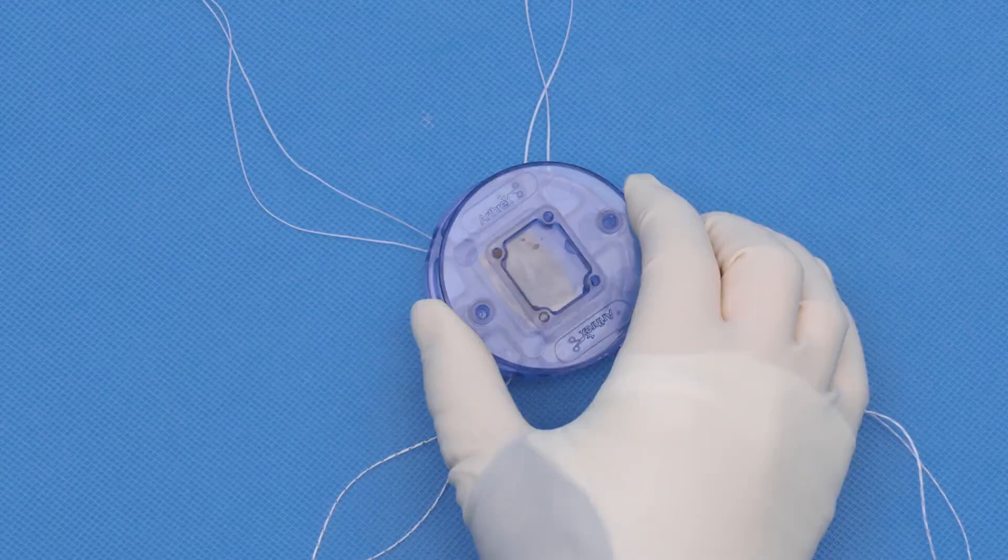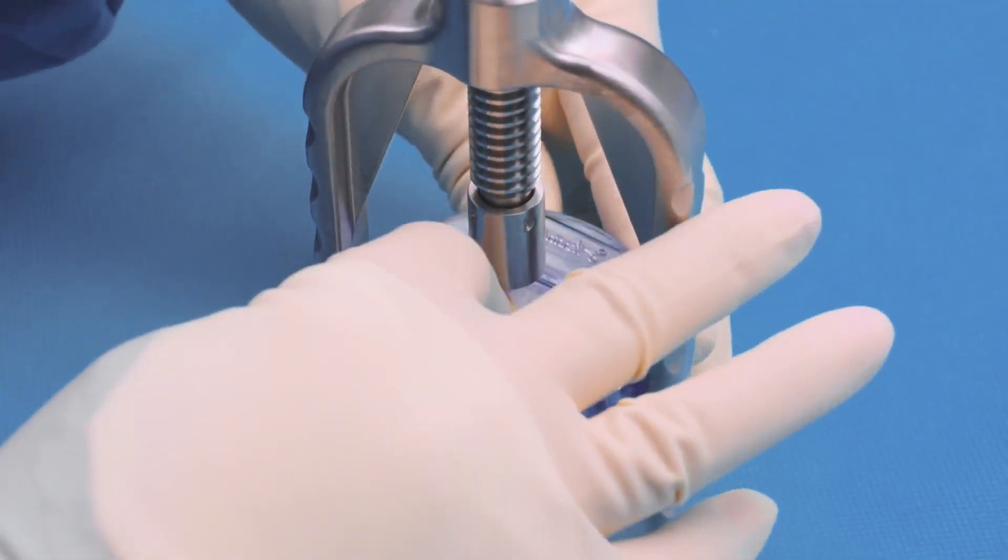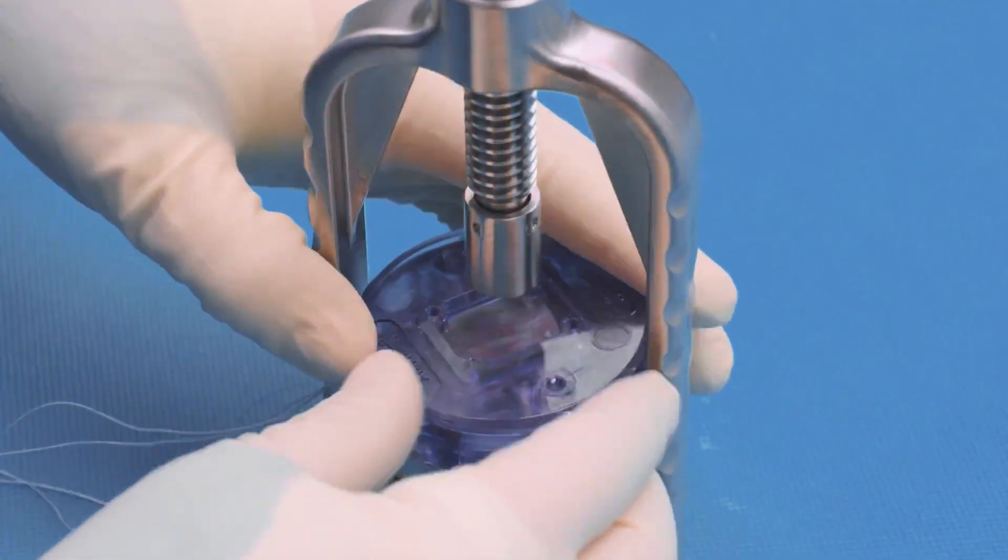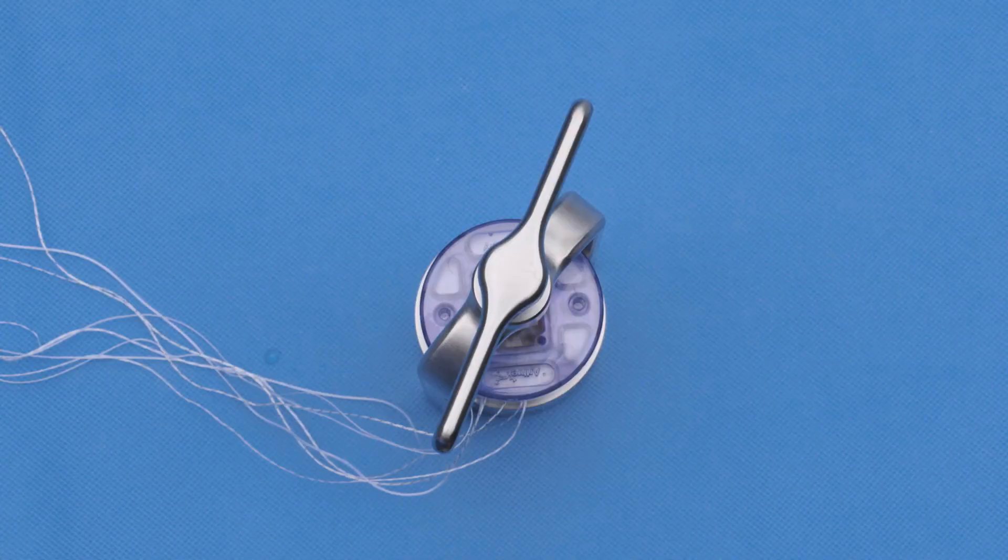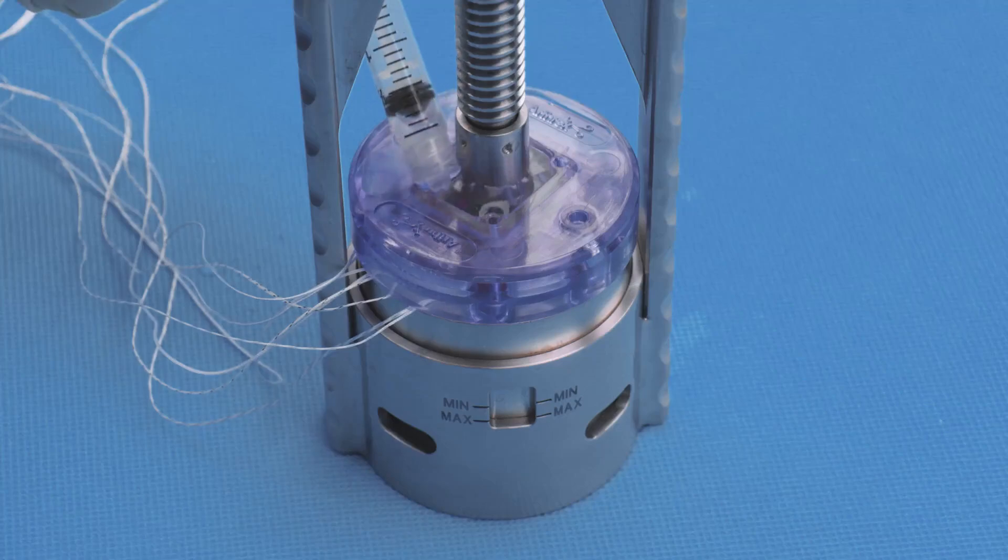If the surgeon is not yet ready for the graft, it is recommended to place the graft in the plates and place under some compression to help keep the graft shape. Additionally, some saline can be added to keep the graft hydrated.